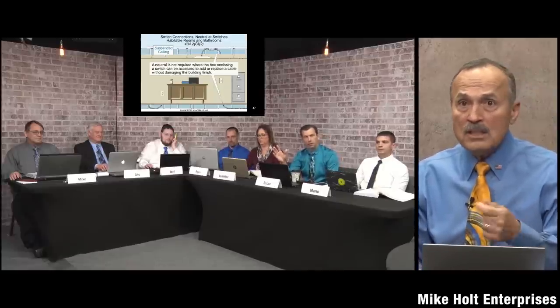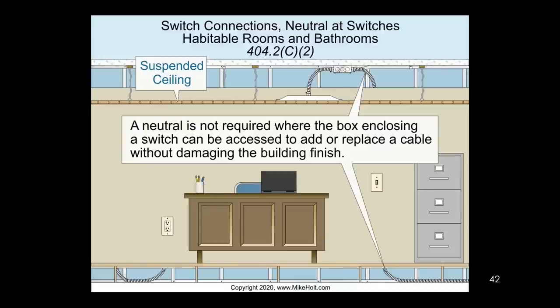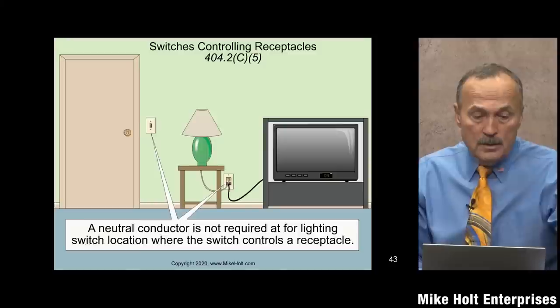Most electricians would say just put in neutrals where required. The code says if you can get a neutral there later — either through a raceway system or accessible space — you don't have to put one in now. When you're wiring thousands of locations in a large building, not pulling thousands of extra feet of wire just for neutrals makes practical sense.